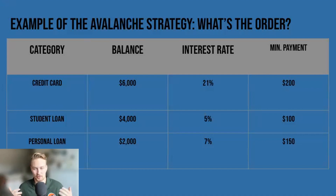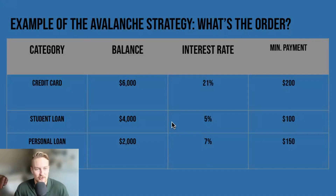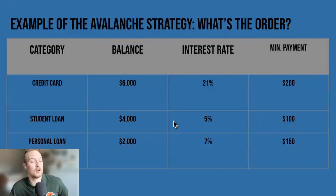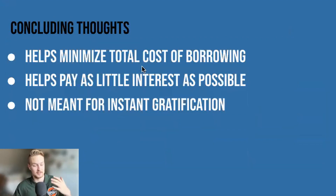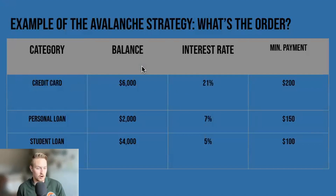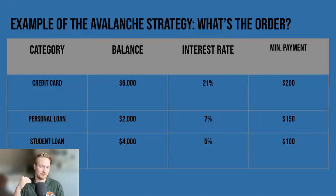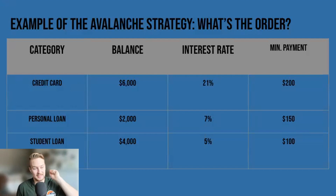What order should they be in for the Avalanche strategy? Say it out loud wherever you are — even if it's uncomfortable, just do it, because to pay off your debt you're going to have to get used to getting uncomfortable and making some sacrifices. The answer: the credit card comes first at 21%, then the personal loan at 7%, then the student loan at 5%. The only thing the Avalanche strategy really cares about is that interest rate — whoever has the highest rate, that's the one you're gunning for first.